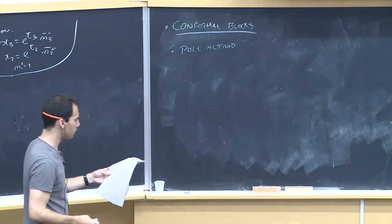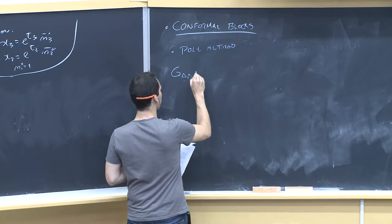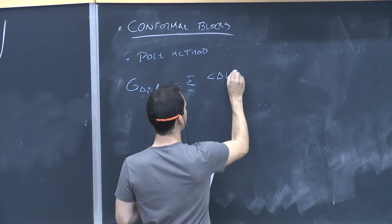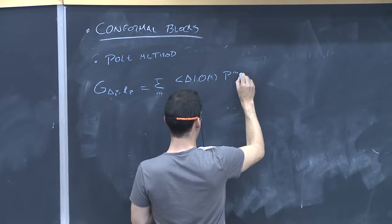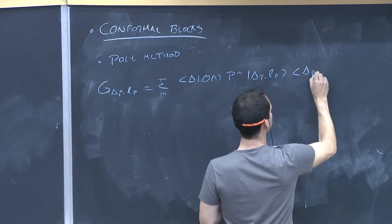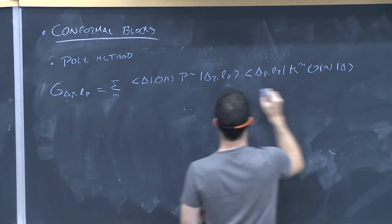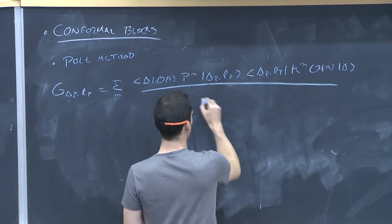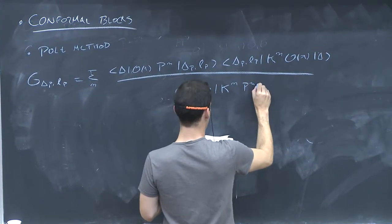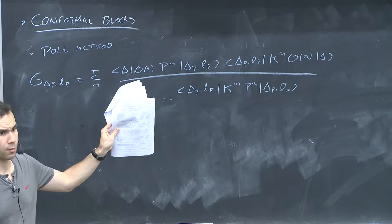I'm going to tell you about a method called the pole method. Recall that conformal blocks have an expansion that looks schematically like: delta, O1, Pn, delta_P, L_P, then the conjugate state, Kn, Ox, delta, delta_P, L_P. This is schematic — the more correct version is what I wrote for the conformal partial waves.